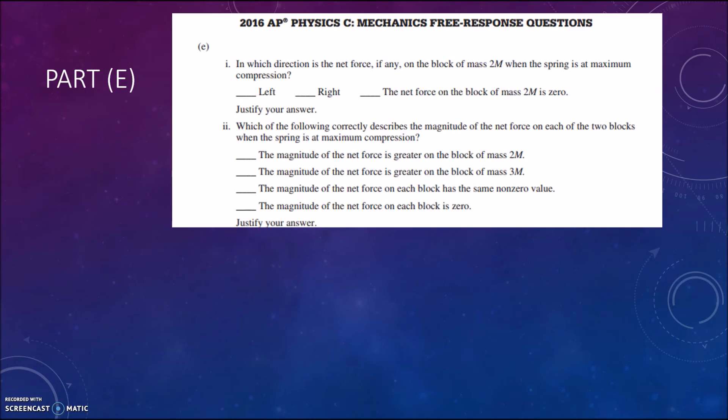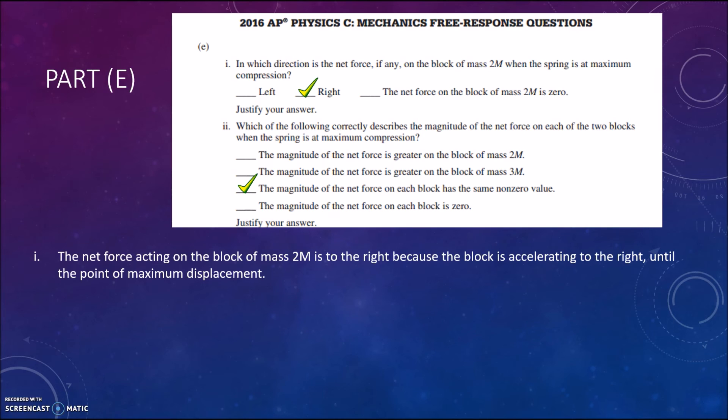So part e asks you to describe which direction the net force is on the block of mass 2m when the spring is at maximum compression. Well almost from common sense this should come easy to you that it will be to the right because the spring is pushing it to the right as the block is accelerating to the right until the point of maximum displacement.